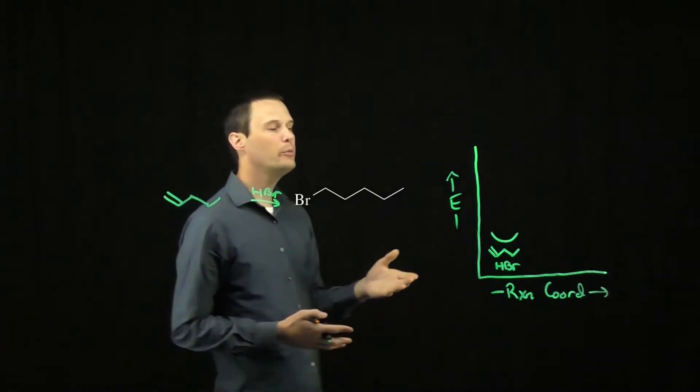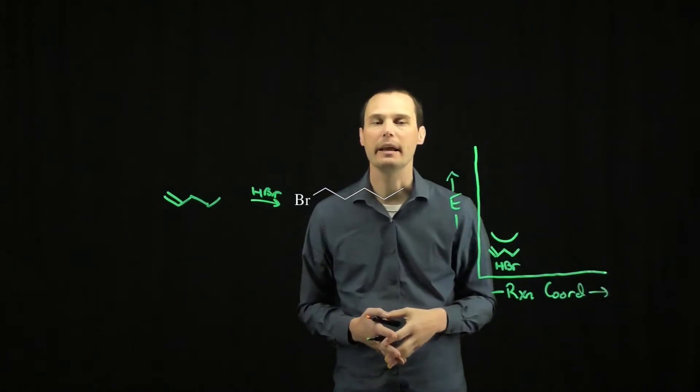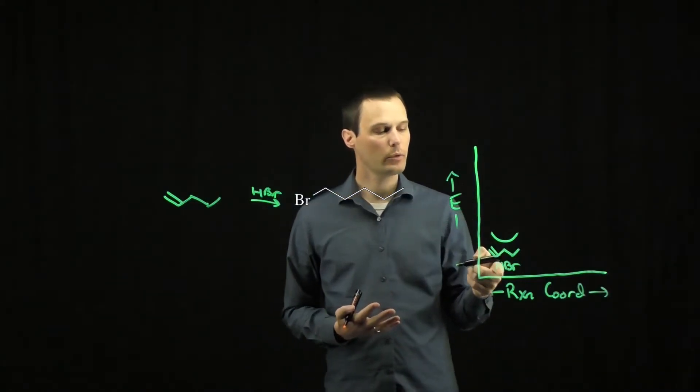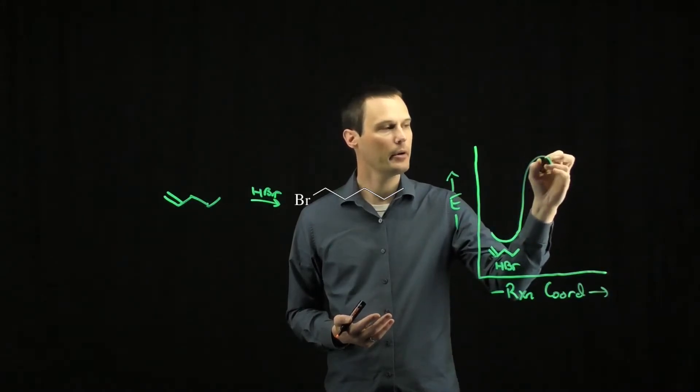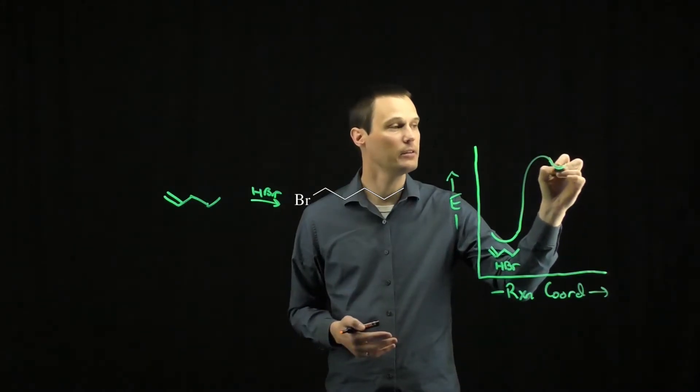If we look at an energy diagram, we start with our alkene and HBr. The alkene will react with HBr, and if we're to form a primary alkyl halide, the primary carbocation would have some kind of intermediate energy.